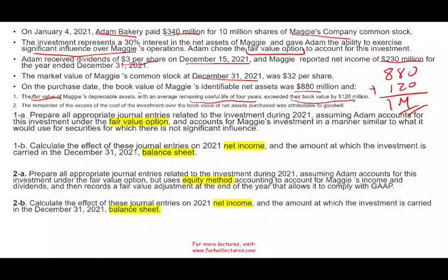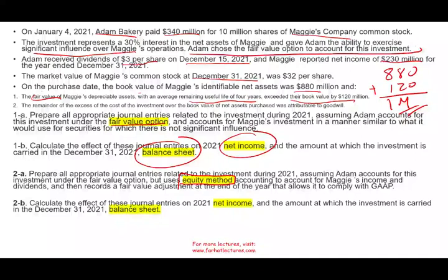We're going to prepare the journal entries first using the fair value option, show the effect on net income, and show the effect on the balance sheet. Then we'll prepare the entries under the equity method. After we use the equity method, we go back and adjust everything to market. I will show you both methods and their effect on net income and the balance sheet.